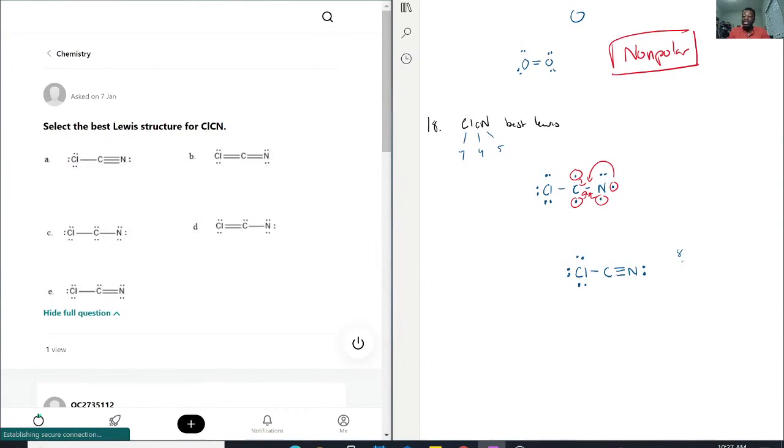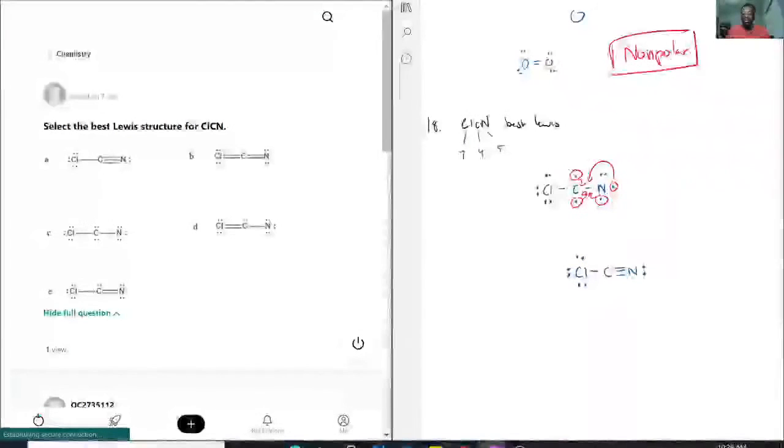We do have 16 electrons, perfect. Now let's see which is the best structure based on the formal charges and also following the octet rule. Chlorine typically for zero charge has three lone pairs and one bond, which is correct.